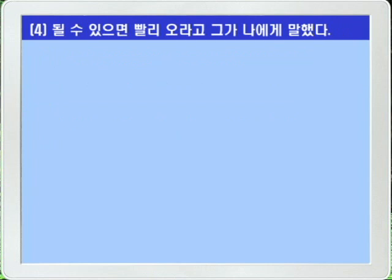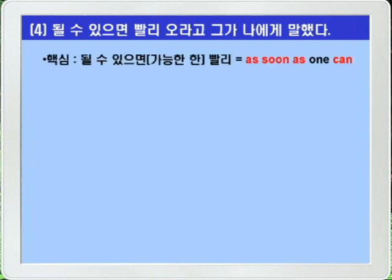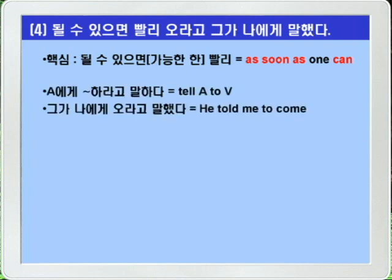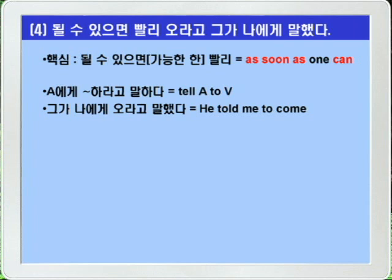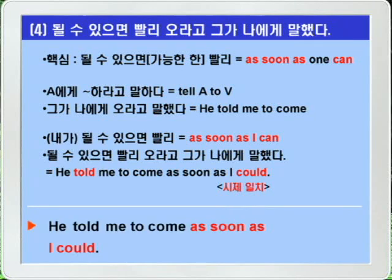Translation Exercise 4: 'He told me to come as soon as I could.' 'Tell A to do' means 'to tell A to do something.' 'As soon as one can' means 'as soon as possible.' Since the main clause verb 'told' is past, tense agreement changes 'can' to 'could' in the subordinate clause. Answer: He told me to come as soon as I could.